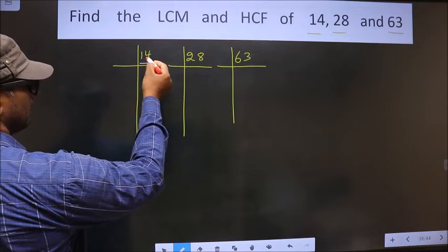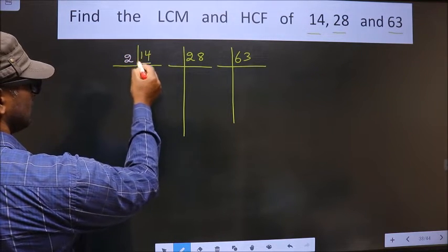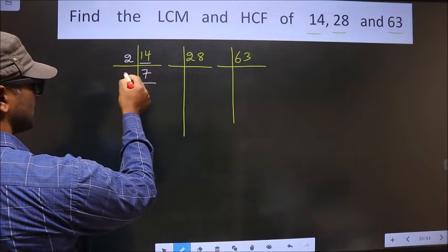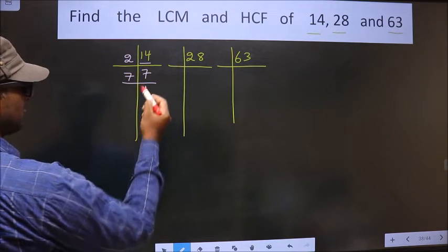Now here we have 14. 14 is 2×7, so 14. Now 7 is the prime number, so we take 7×1, which is 7.